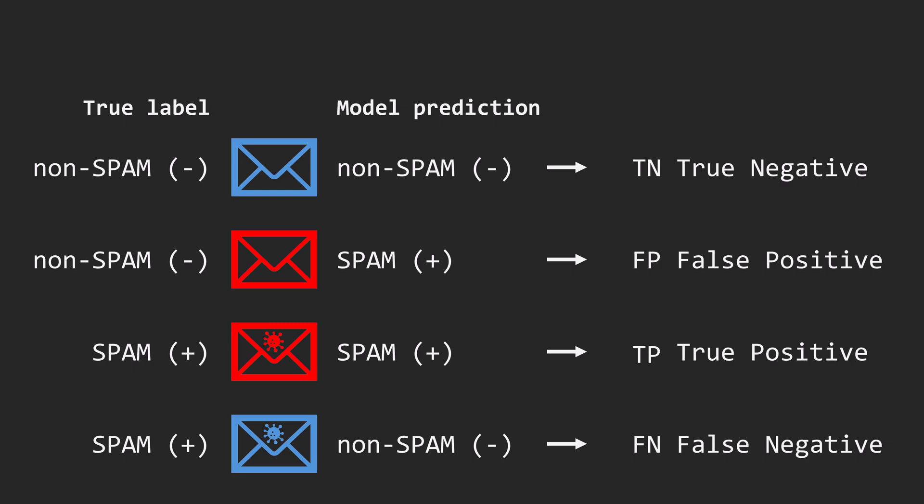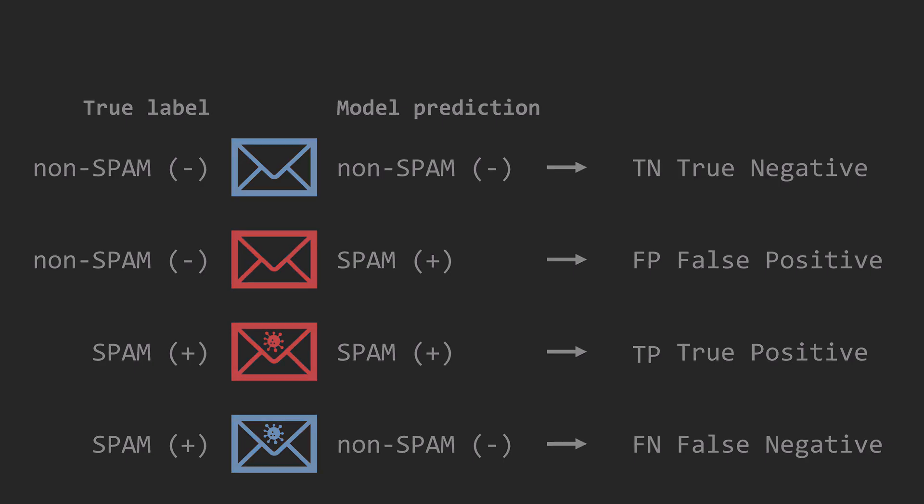And the last case is false-negative, where a spam email is incorrectly identified as non-spam. I will use colors to indicate the model's predictions: blue for negative, non-spam, and red for positive, spam predictions.